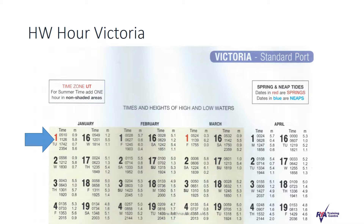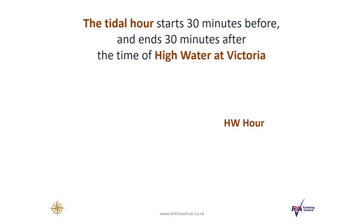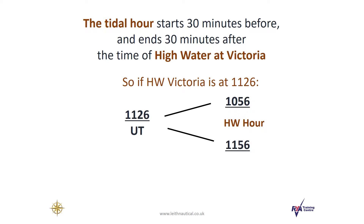For example, on the 1st of January, we can see that the time of high water is 11:26. The Tidal Hour starts 30 minutes before and ends 30 minutes after the time of high water at Victoria. So if high water at Victoria is at 11:26, then our high water hour starts at 10:56 and ends at 11:56. This is what we call high water hour.